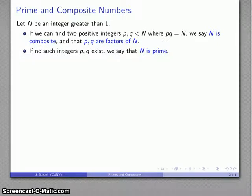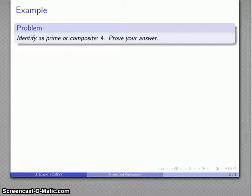On the other hand, if we can't find such integers, we'll say that n is a prime number. This can actually be a little bit more challenging than it might seem to be.